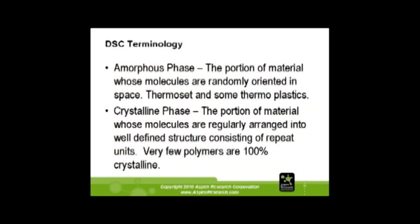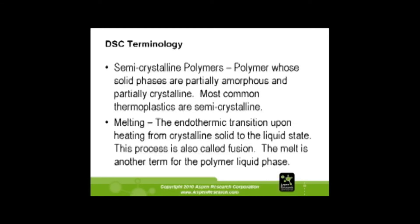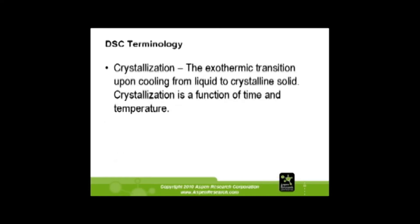Some definitions. Amorphous material — these molecules are randomly oriented in space. This would be something like a glass transition; that's what you're looking for in an amorphous region. Semi-crystalline is the portion whose molecules are regularly arranged — that would be like polyethylene or polypropylene, and you're going to be looking for the melt. Semi-crystalline materials have a little crystalline and a little amorphous material. Melting is the endothermic transition upon heating from the crystalline solid to the liquid state, and crystallization is the opposite — an exothermic transition from the liquid state to the crystalline state.